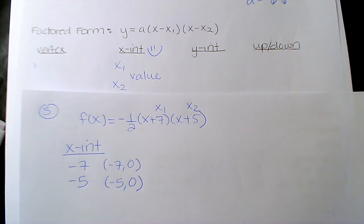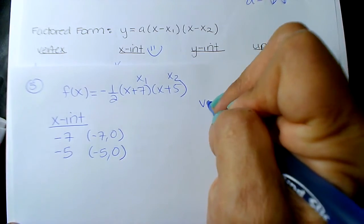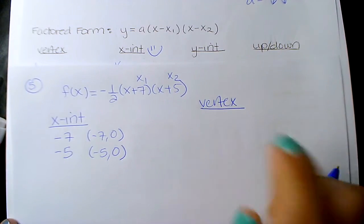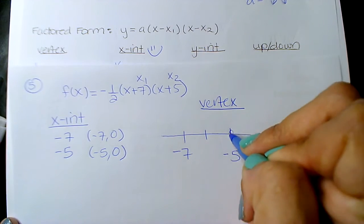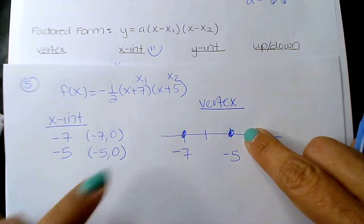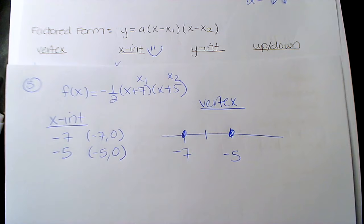And even the y-intercept is kind of fast. We have to find the vertex, so let's find it the easy way. The favored way for the vertex — many of you are realizing — you take your number line. Here's negative 7, here's negative 5. If this is where the parabola is crossing your x-axis, your vertex is always at the middle. Wherever the middle number is, that's your x-value for the vertex, that's your axis of symmetry. Negative 6.